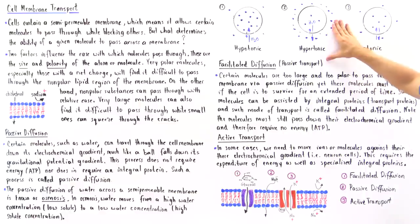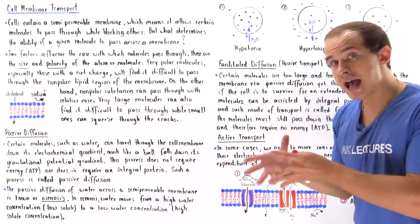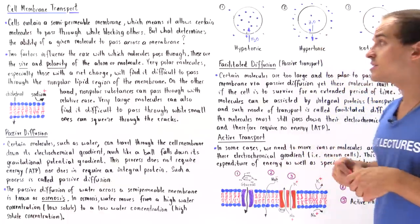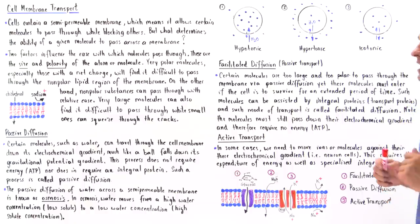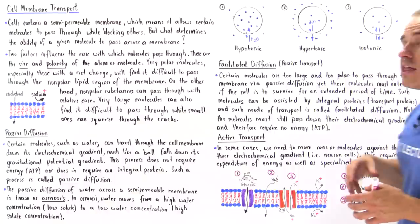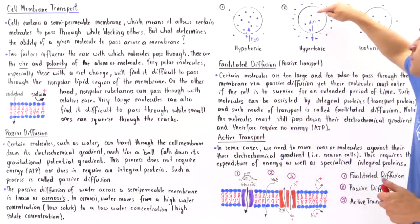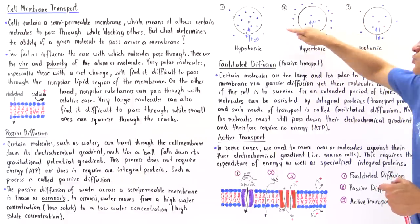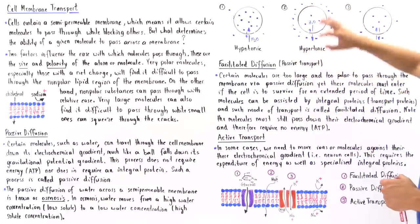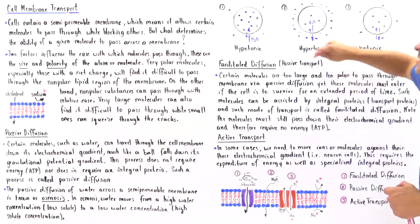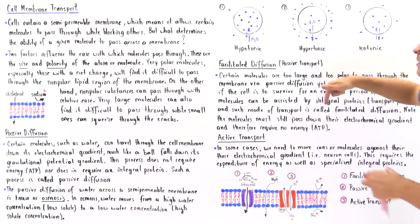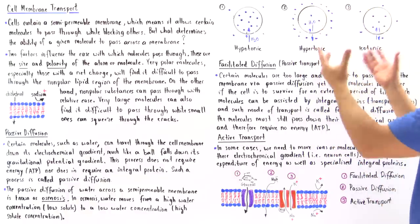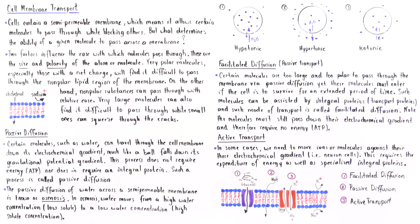A hypertonic solution is the opposite. Inside the cell the cytosol has a low solute concentration, while outside there is a high solute concentration. The net movement of water is from the high water concentration inside to the low water concentration outside — net movement is outward. Over time, the cell will shrink.